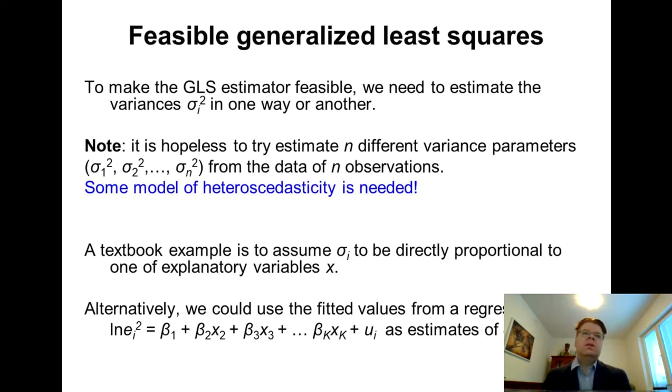So in a typical textbook case, assume that the sigma i is proportionate to one of the explanatory variables. If we think about the housing market example we have considered earlier in this course, we could assume that the standard deviation of the error term, the sigma i, would be directly proportionate to the size of the apartment in square meters. We could then replace this sigma i by square meters of the apartment, and then we could just divide by the square meters each variable.